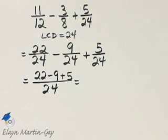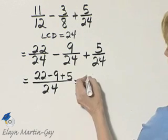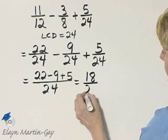So what is 22 minus 9? 22 minus 9 is 13, and 13 plus 5 is 18 over 24.